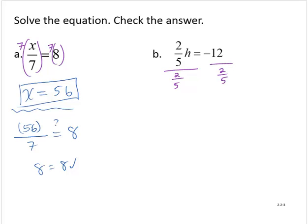This isolates the variable h. Now on the right-hand side, remember, when we divide by a fraction, we commonly learn to multiply by the reciprocal of that fraction. And so we have negative 12. And let me think of that 12 as a 12 over 1.